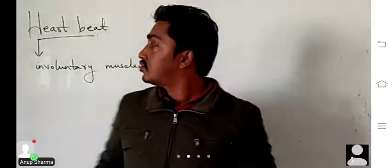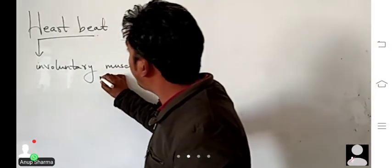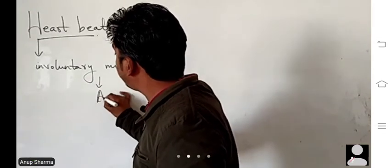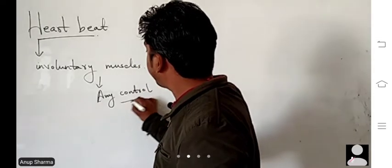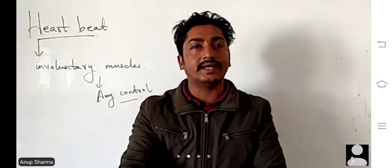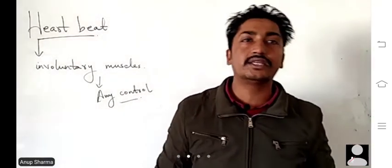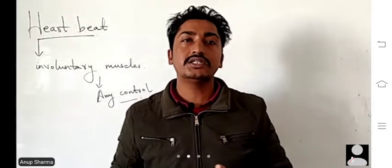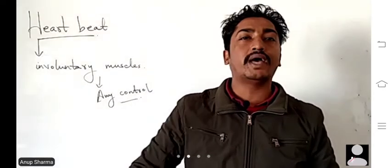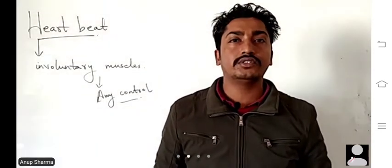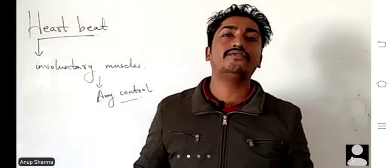What do we mean by involuntary muscles? Involuntary muscles are those muscles over which we don't have any control. For example, the muscles of our hand — we move our hand, our body, our legs due to muscles and bones, and we have control over that. If I don't want to move my hand, I will not move it. Those are called voluntary muscles.